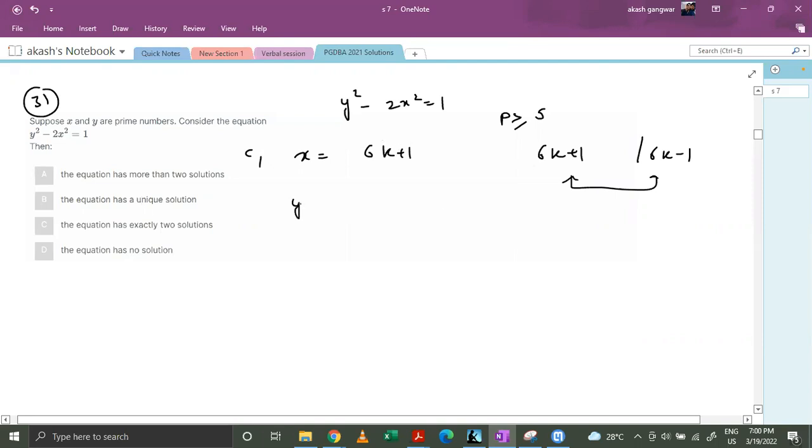So let's find out y square equals to 2(6k+1)² plus 1. This becomes 72k² plus 24k plus 2 plus 1, which is nothing but 72k² plus 24k plus 3. This is 3 times (24k² plus 8k plus 1).